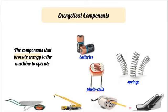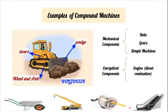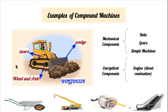Let's now proceed with the second goal of this class, which is to analyze some daily life examples of compound machines. Here we have a bulldozer. A bulldozer is made up of three different simple machines: the wedge, which helps to take gravel and ground easily due to its shape; the lever, which helps in amplifying a force to lift the heavy amount of ground; and the wheel and axle, which helps with the motion of the whole machine without much effort. The energetical component of the bulldozer will be the engine using diesel in order to make the whole machine actually move. And the mechanical components include the belts, the gears inside the machine, and in general, the simple machines all together.